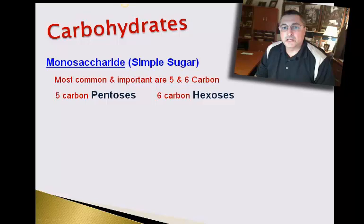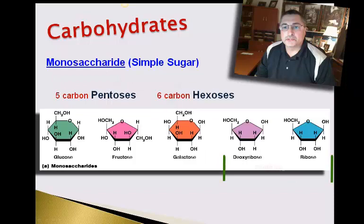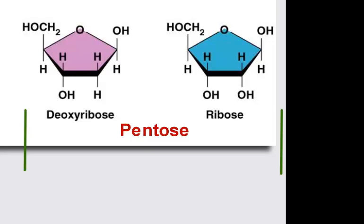The two most common pentoses are deoxyribose and ribose. Neither one of these will be used for energy in our body — they're specialized. These five-carbon sugars will actually be part of the backbone for our nucleic acids. The D in DNA stands for deoxyribose, and the R in RNA stands for ribose.